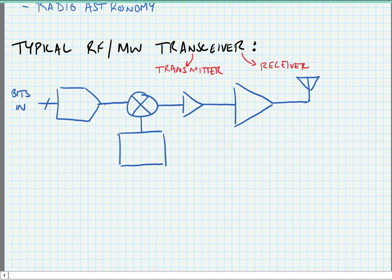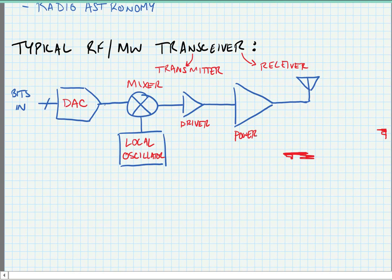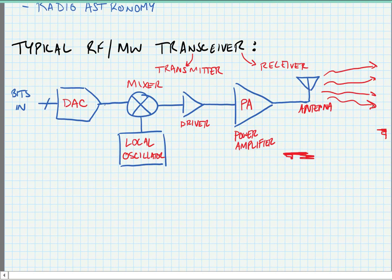Here we have the blocks shown for a typical transmitter. We take some data bits in and convert them to analog using a DAC. We up-convert them to high frequency using the combination of a mixer and a local oscillator. We have a driver amplifier, a power amplifier, and an antenna. The antenna takes the signal from the power amplifier and radiates it off into space, where it will ultimately be collected by a target receiver.